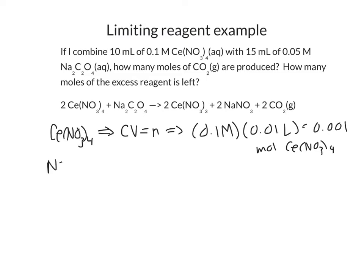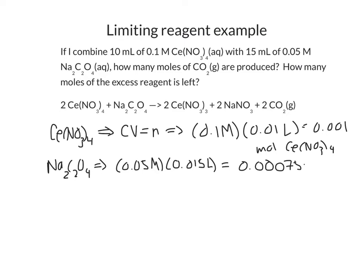For the sodium oxalate, we have a concentration of 0.05 molar and a volume of 15 milliliters, or 0.015 liters. So we find that 0.05 times 0.015 equals 0.00075 moles of sodium oxalate available to us. Now we need to take into account the stoichiometry of this reaction, which is 2 to 1.